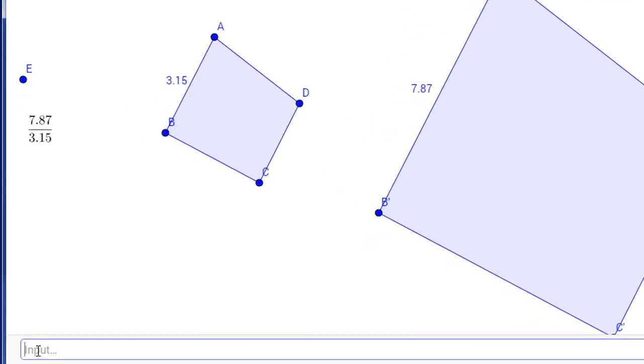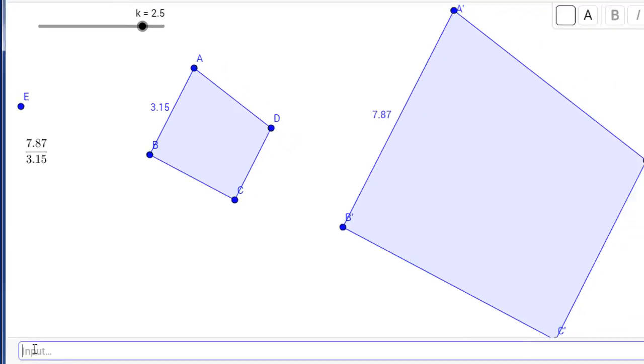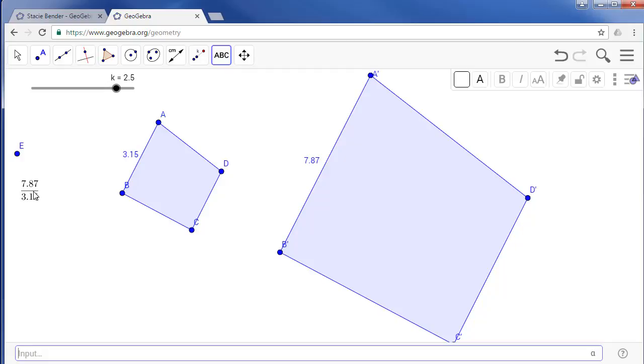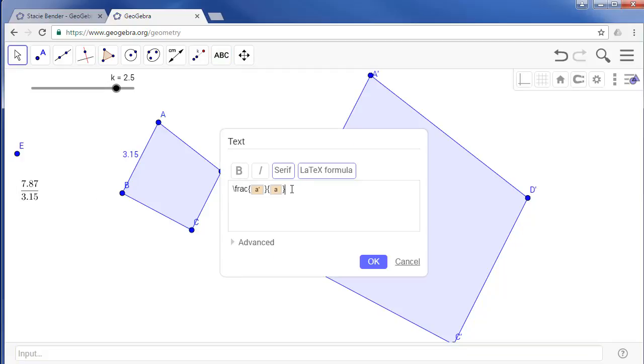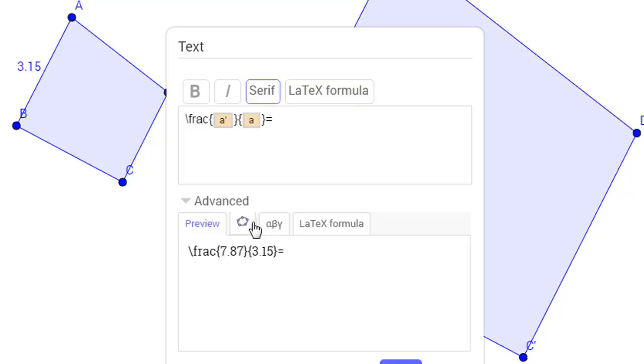So in the input bar, let's declare a new variable, let's call it sides. And we're going to let sides be equal to side A prime divided by side A. And now we'll double click on our text and we'll let this be equal to, we need to use the LaTeX formula, advanced and tell it to grab the variable named sides. And we click OK.